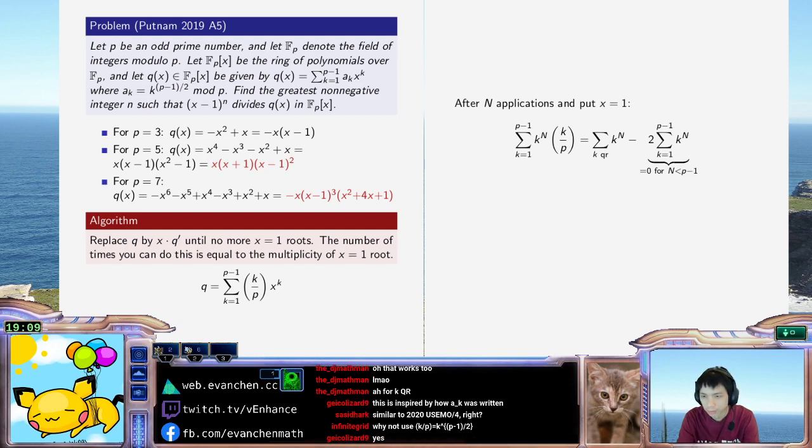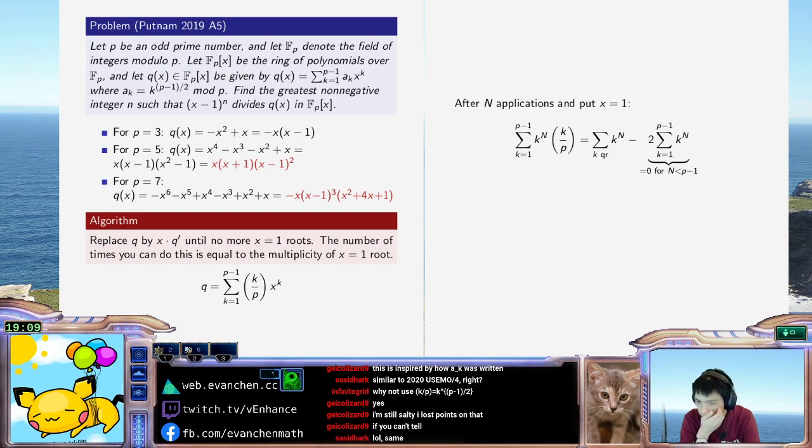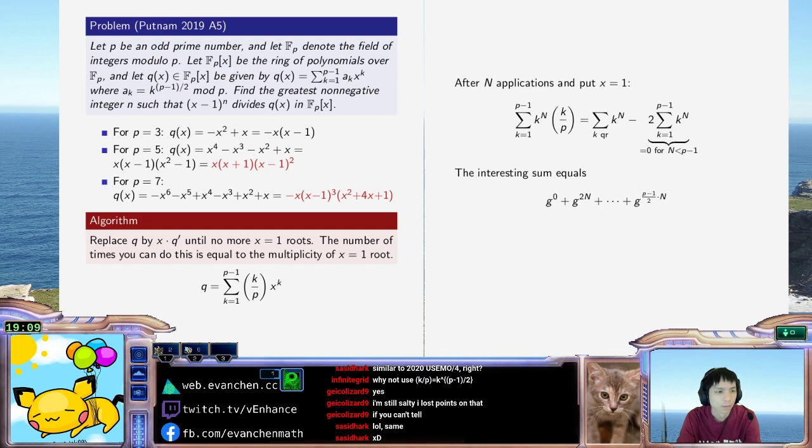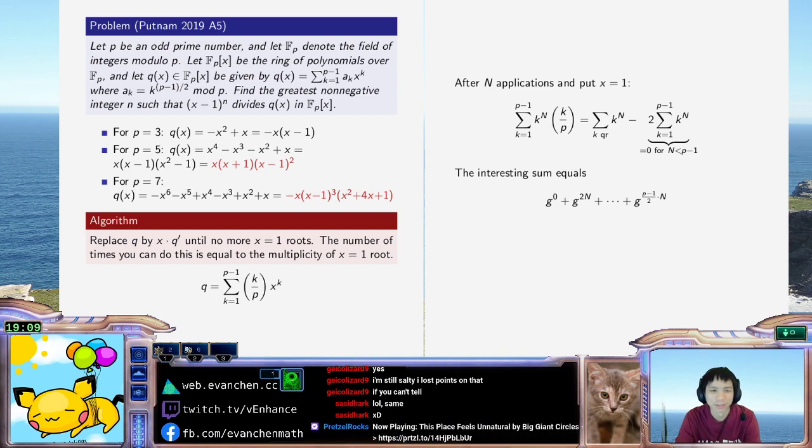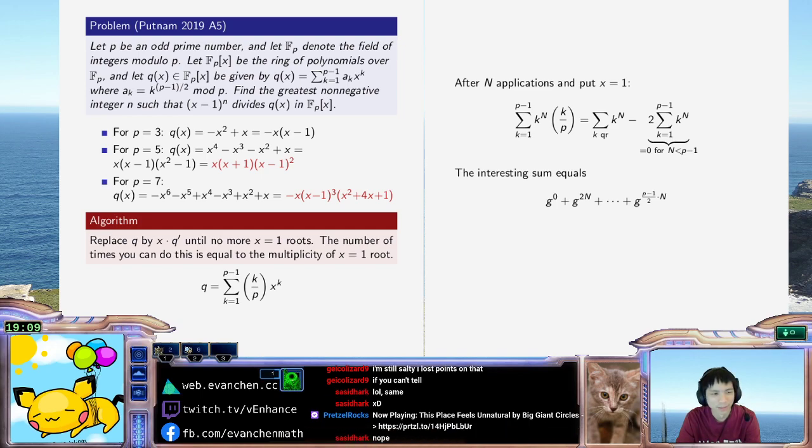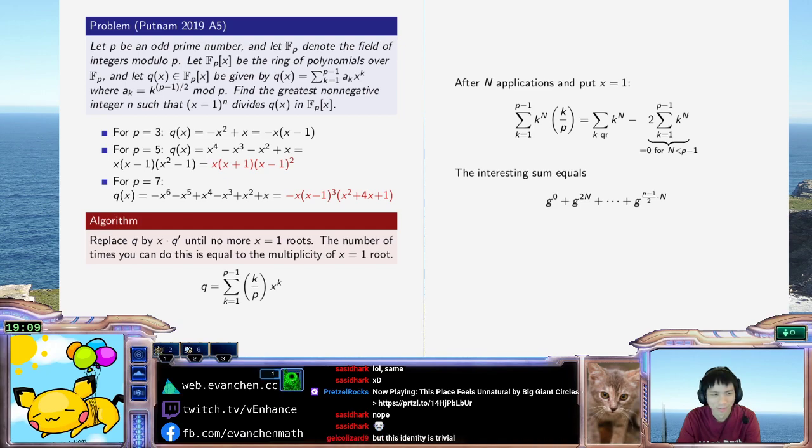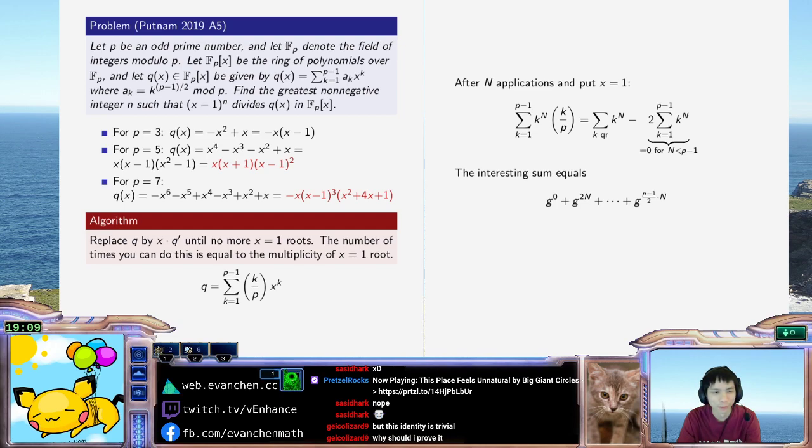I'll just write it explicitly. G to the 0 plus G to the 2n plus dot dot dot plus G to the p minus 1 over 2 times n. Did you guys not prove this identity? Shame on you. I'm surprised that was a deduction too, to be honest, though. But I think you should at least say, like, because of primitive root or geometric series. Like, I think there's not an excuse to take the extra 10 seconds to at least write the words, like, either the words primitive root or the words geometric series, so you're not just making stuff up.